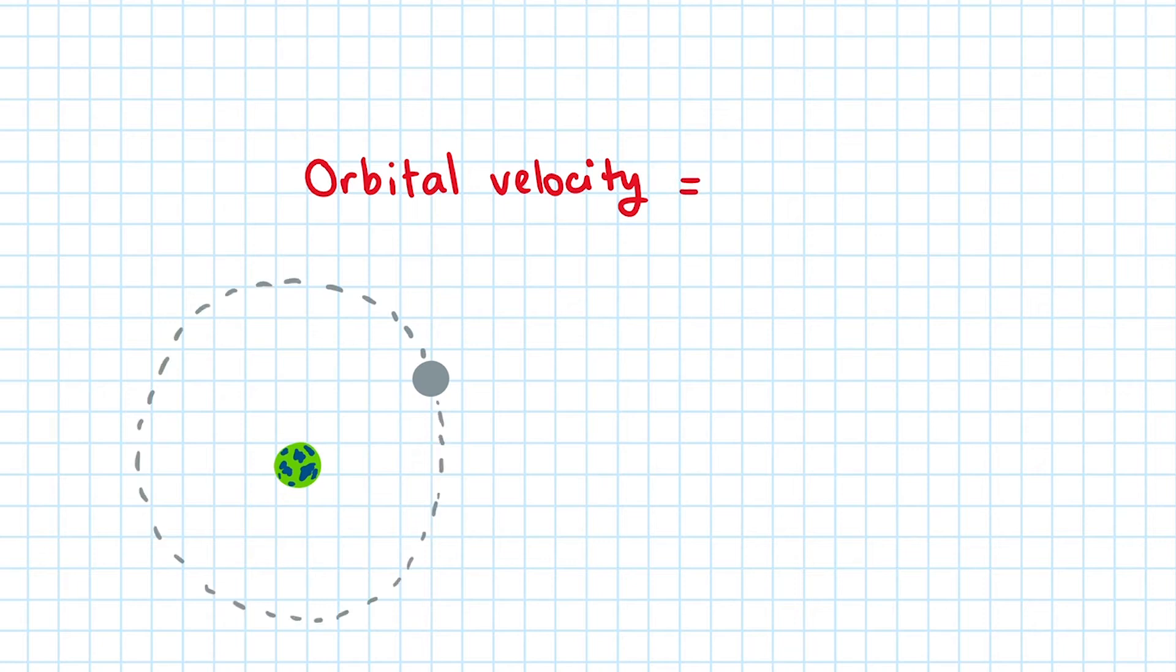So the orbital velocity is distance traveled, in this case it is 2πr, divided by the time period, the time for it to complete one revolution. Writing it in symbols, we have v = 2πr/T.